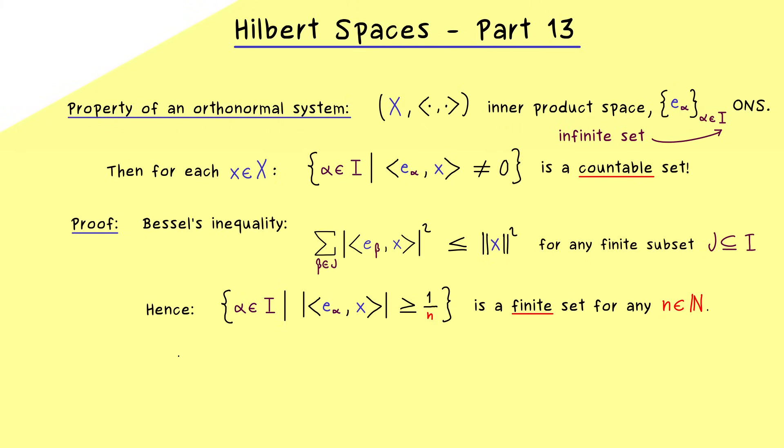Then, in the next step, we can just form the union of this set over all natural numbers. So it is a countable union of countable sets, which means the result is also a countable set. And now as you might see, the resulting set is exactly the set we were interested in before. So this finishes our proof.